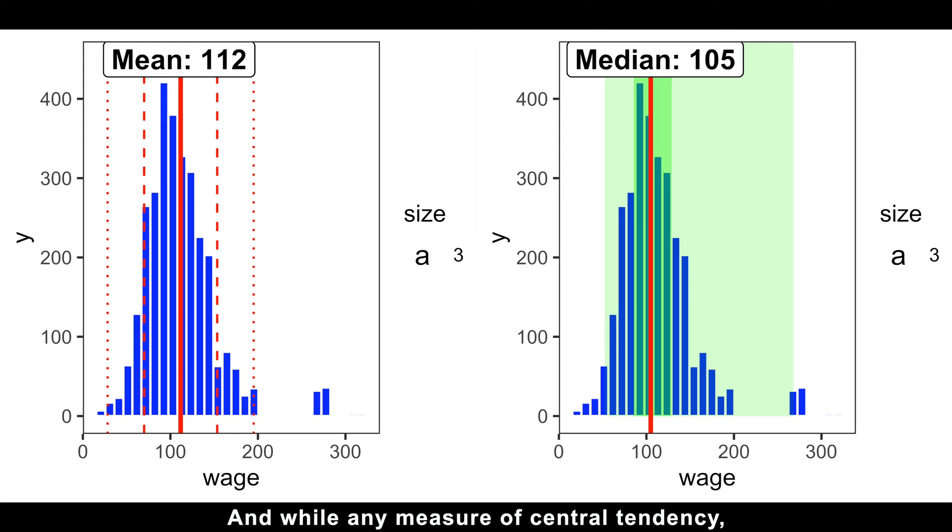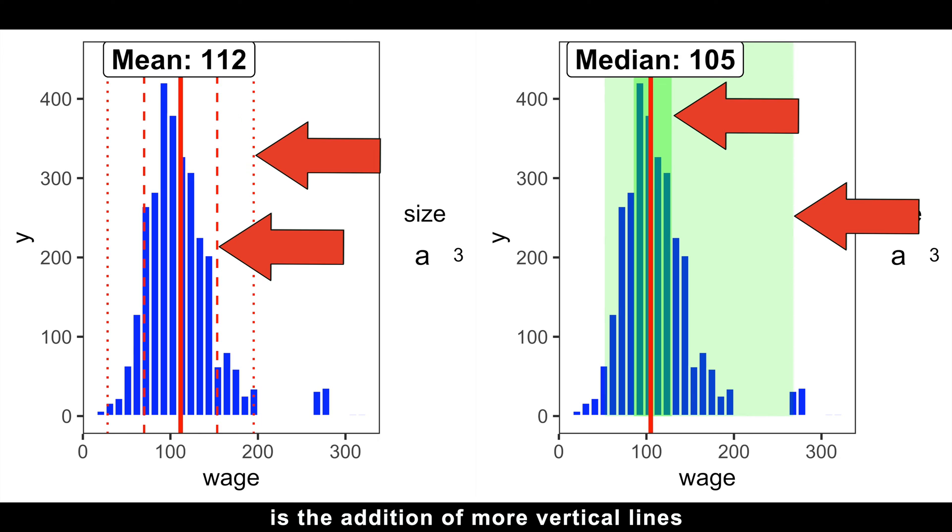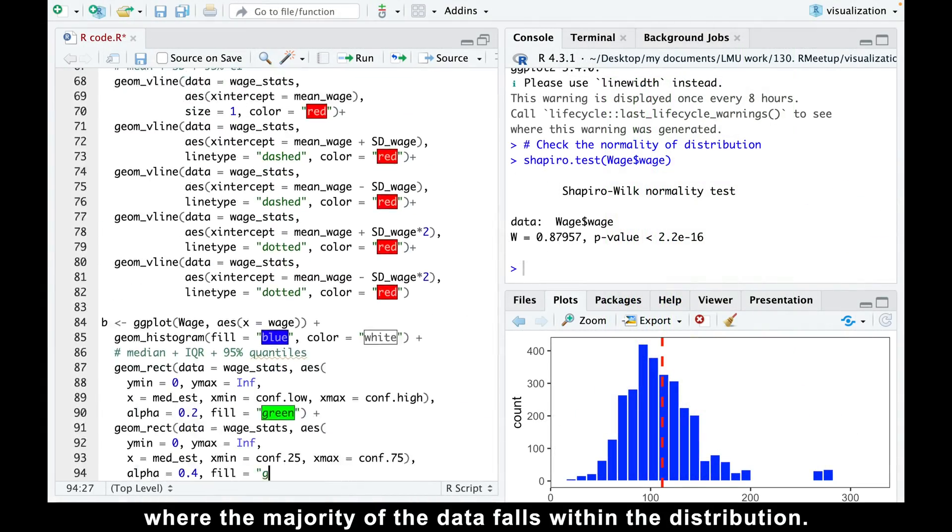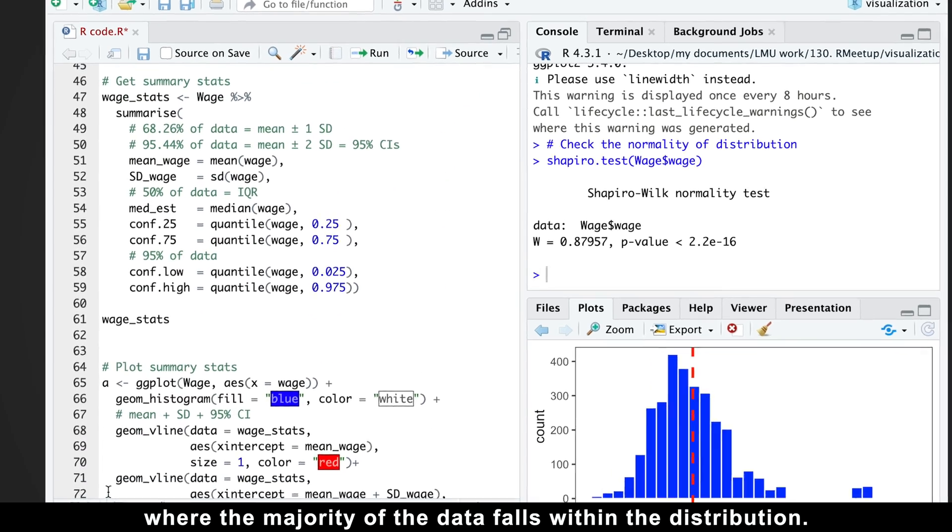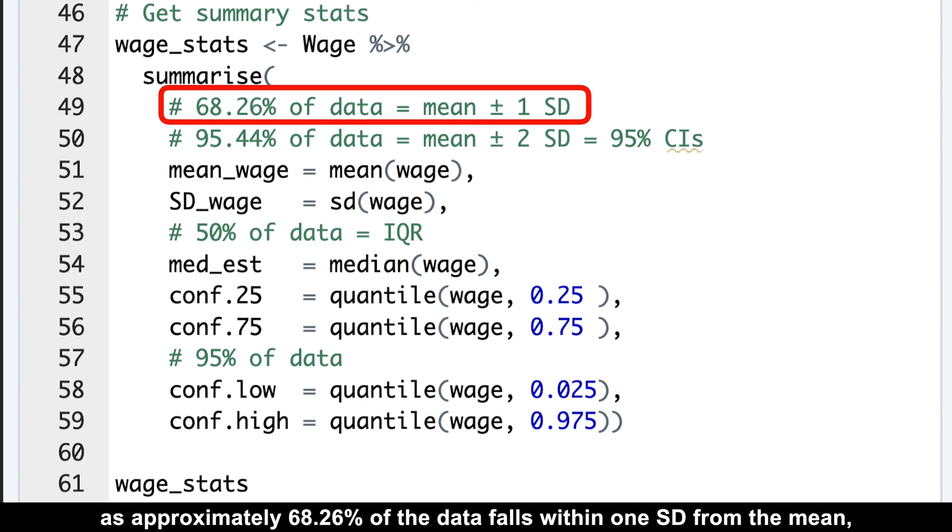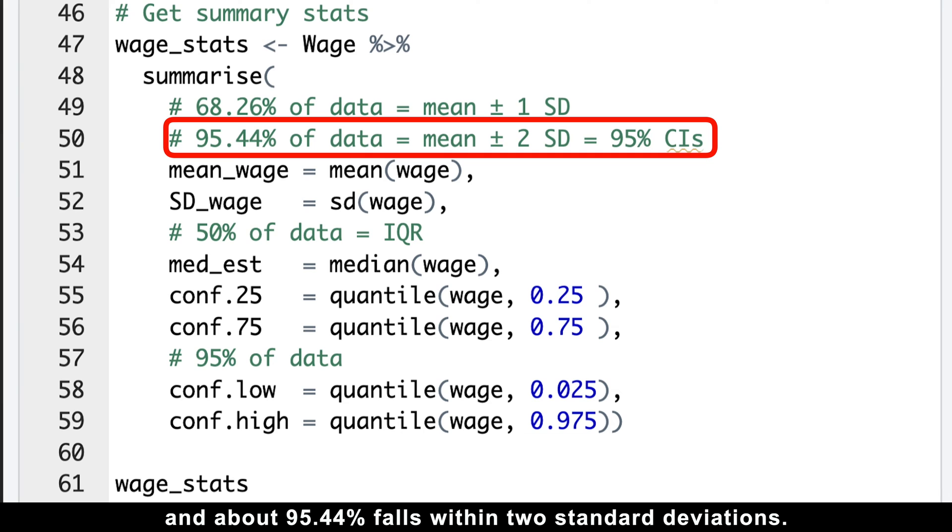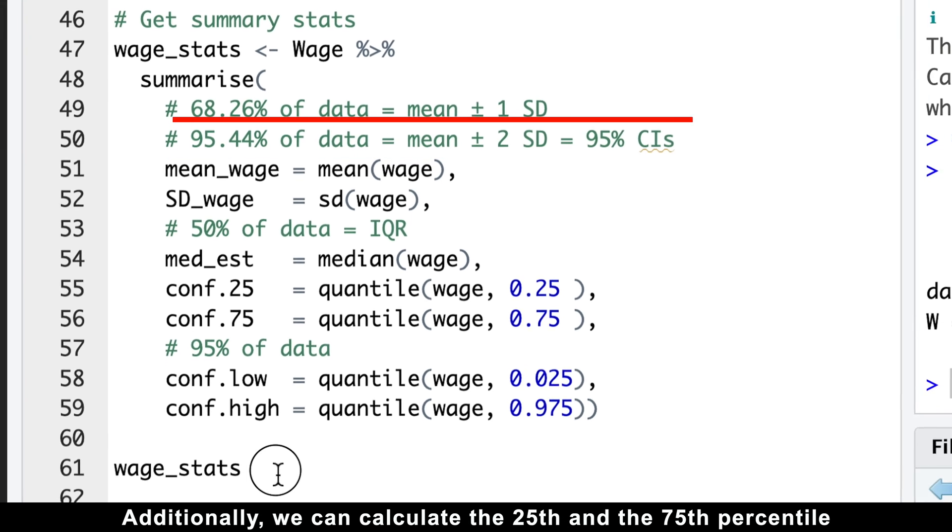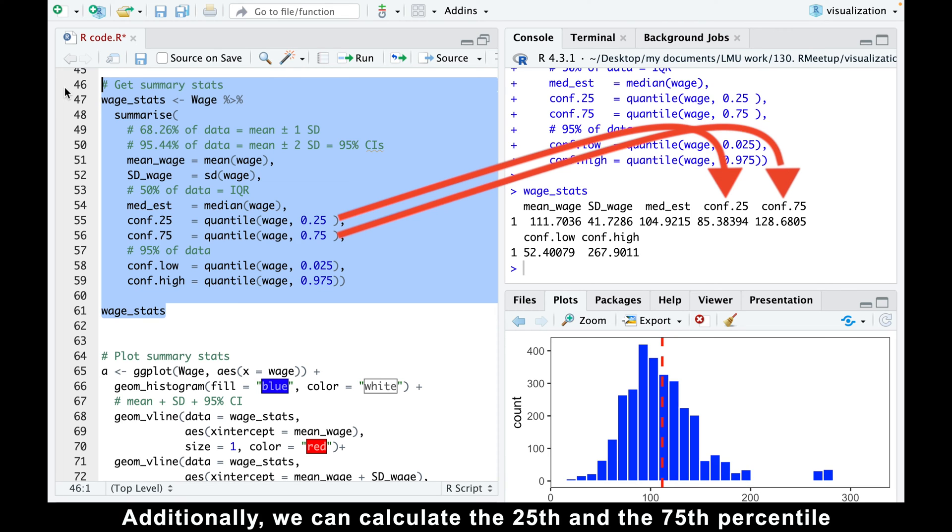While any measure of central tendency, whether it's the mean or median, is indeed useful, what enhances our understanding even further is the addition of more vertical lines to display standard deviations or quantiles. These lines help us visualize where the majority of the data falls within the distribution. To achieve this, we begin by calculating the standard deviation, as approximately 68% of the data falls within one standard deviation from the mean, and about 95% of the data falls within two standard deviations. Additionally, we can calculate the 25th and 75th percentile to depict the interquartile range, which encompasses the middle 50% of the salary values.